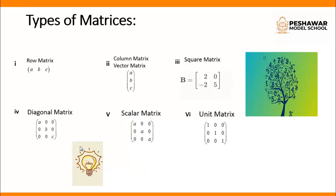Next are the types of matrices. There are different types of matrices. The first one is the row matrix — a matrix having only one row is known as a row matrix. The second type is the column matrix — a matrix having a single column is known as a column matrix, or we can call it a vector matrix. The third type is the square matrix — if a matrix contains an equal number of rows and columns, it is known as a square matrix.